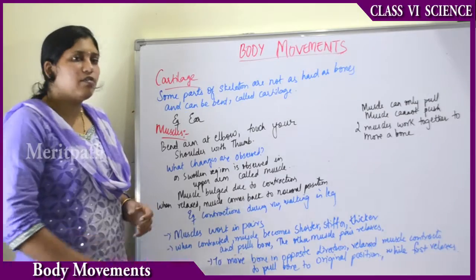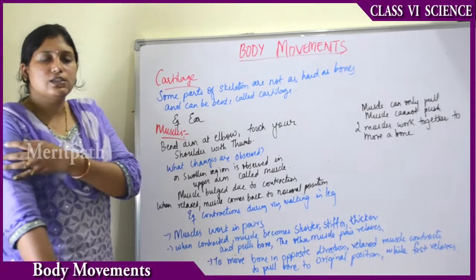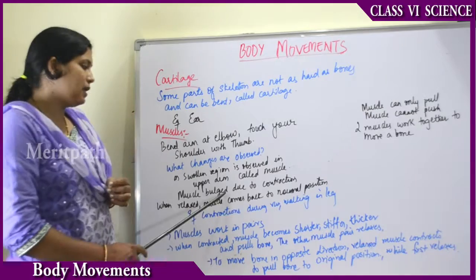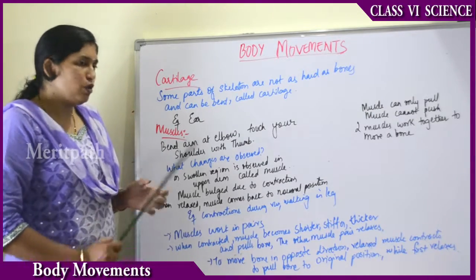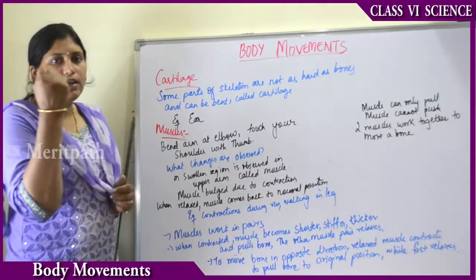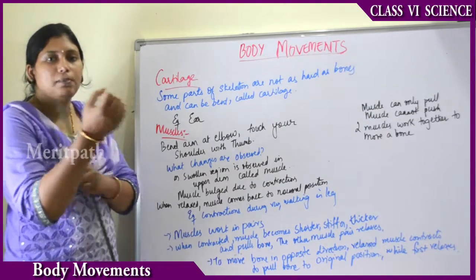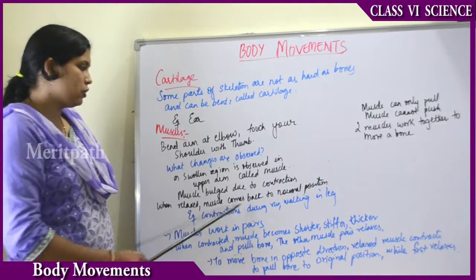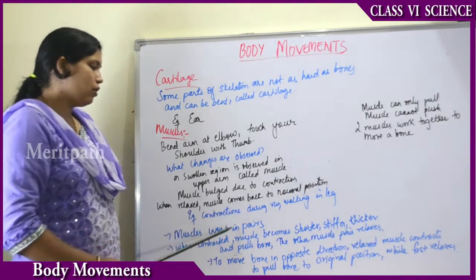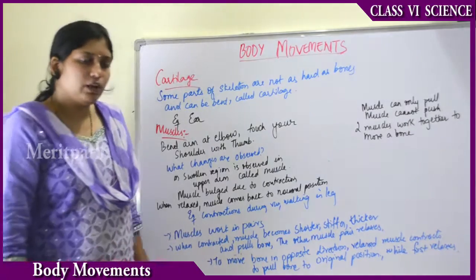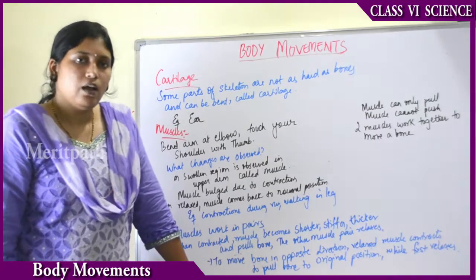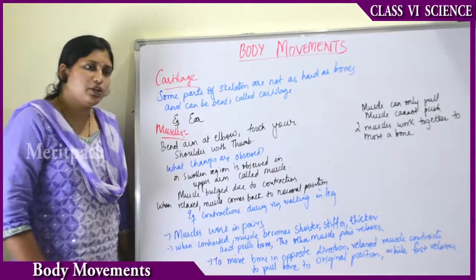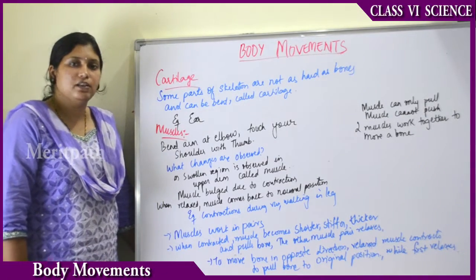Why did the muscle swell up? It swelled up due to contraction — the muscle bulged due to contraction. When you bend your arm, the muscle bulges and swells up due to contraction. When you relax, it goes back to the normal position. Contractions in the leg during walking, running, etc., are all due to the muscles. Contraction and relaxation of the muscles help in movement.